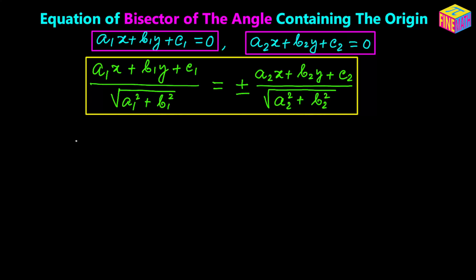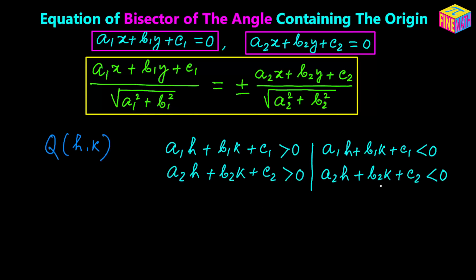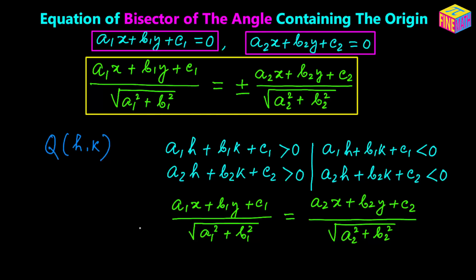In the previous video, we discussed that if we have a point q with coordinates (h, k), we substitute those coordinates into the left-hand side expressions of the equations of the original straight lines and look at the signs. If both expressions give values of the same sign — whether both positive or both negative — then we use the plus sign for the equation of the bisector.